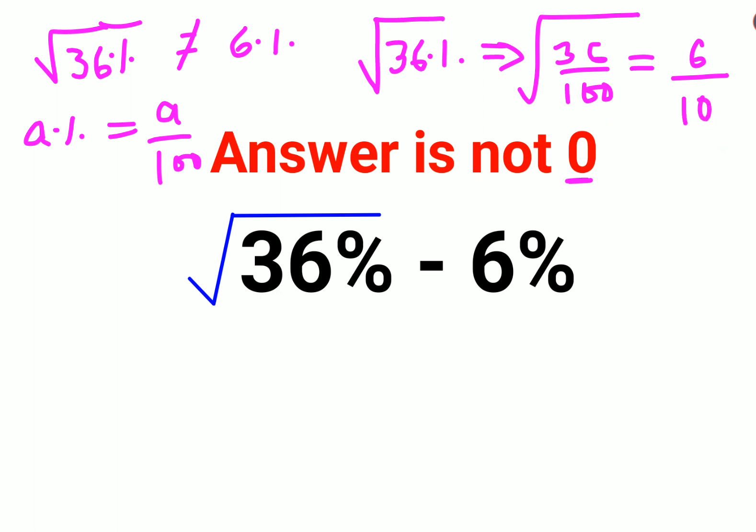So I hope you've understood that √36% is not 6%. So now, instead of √36%, we'll write 6 upon 10, and instead of minus 6%, we'll write it as 6 upon 100.